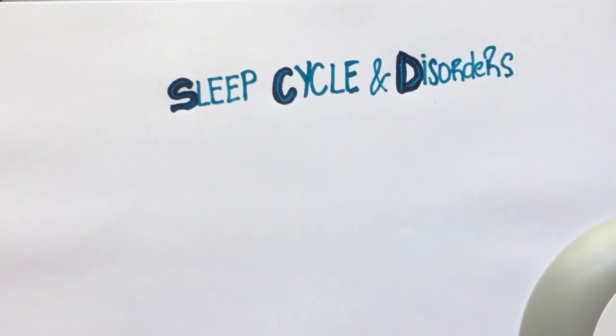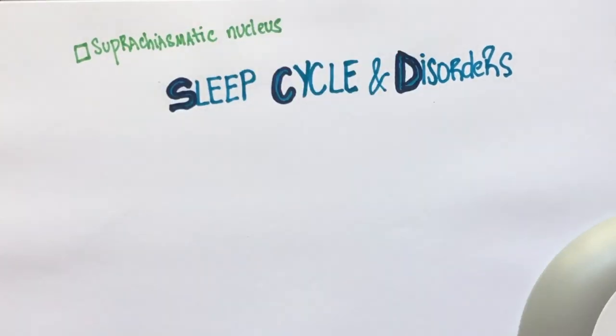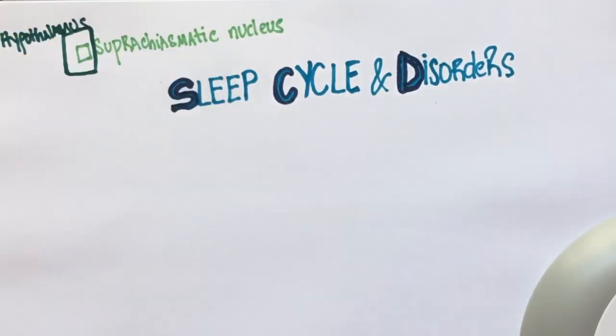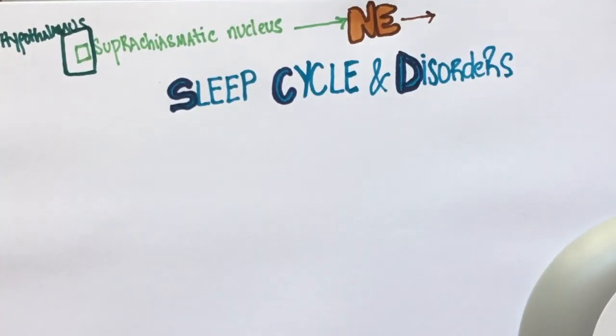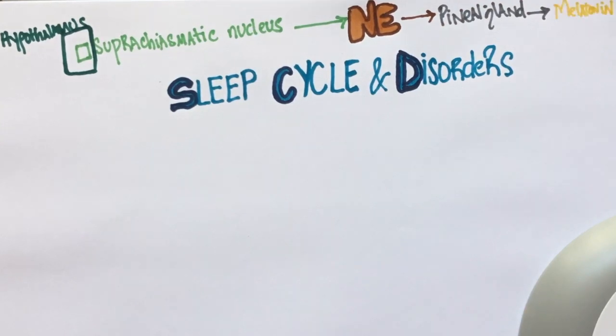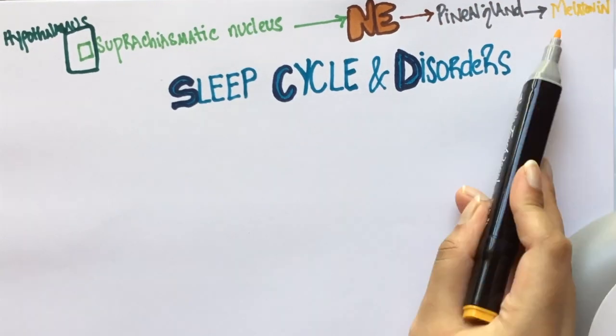Our sleep cycle is controlled by the suprachiasmatic nucleus. This structure is present in the hypothalamus. The suprachiasmatic nucleus triggers the release of norepinephrine. This stimulates the pineal gland to release melatonin. Melatonin regulates the sleep cycle.